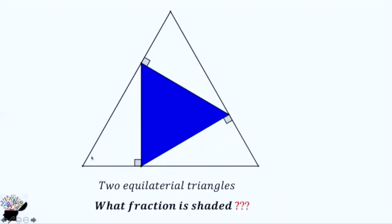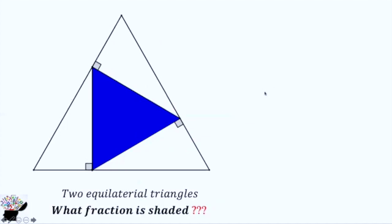Now this side is already 60 degrees, which means the angle here is 30 because the sum of interior angles of a triangle is 180. So we have 60 degrees here and 30 degrees here.